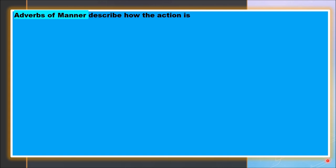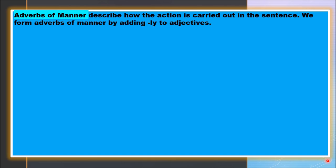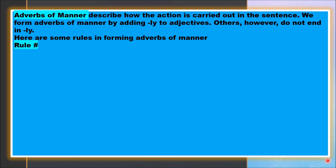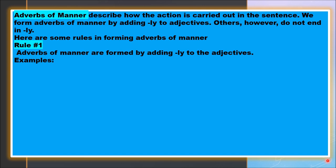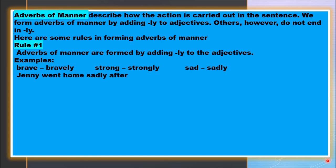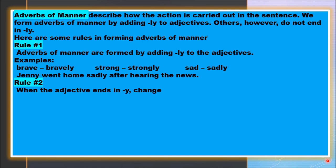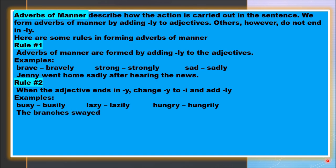Take note that adverbs of manner describe how the action is carried out in the sentence. We form adverbs of manner by adding -ly to adjectives, though some do not end in -ly. Rule 1: Adverbs of manner are formed by adding -ly to adjectives. Examples: brave → bravely, strong → strongly, sad → sadly. Sentence example: Jenny went home sadly after hearing the news.